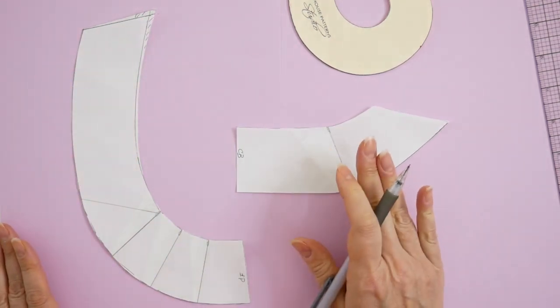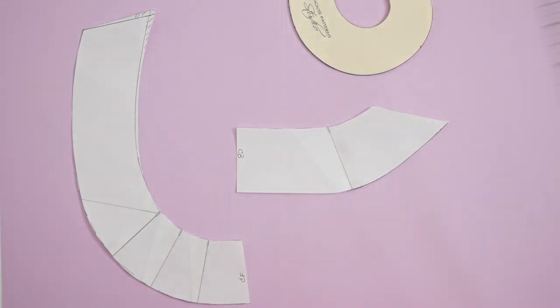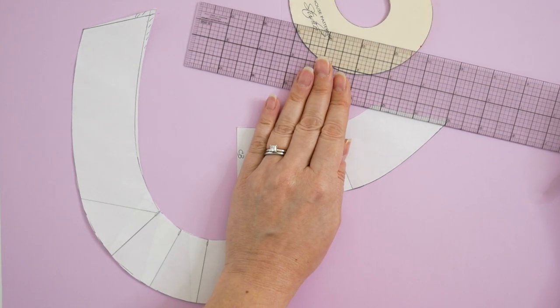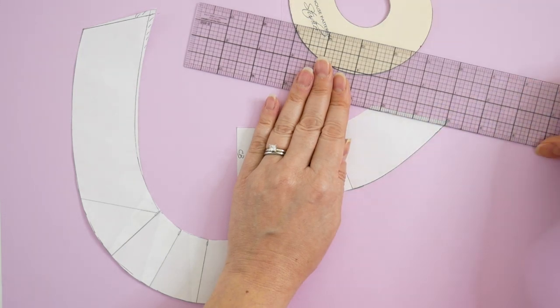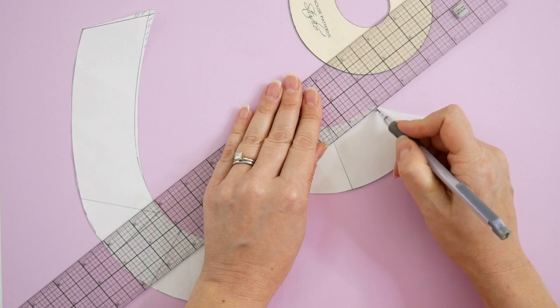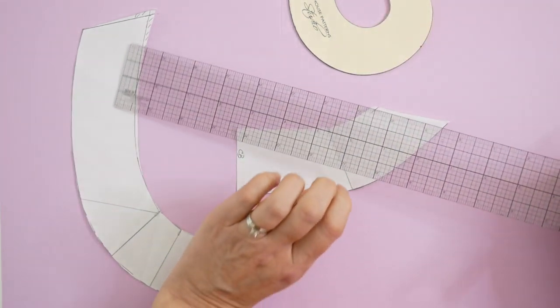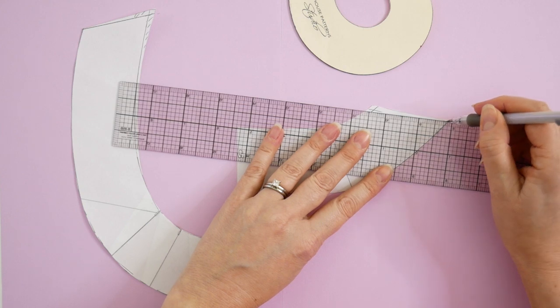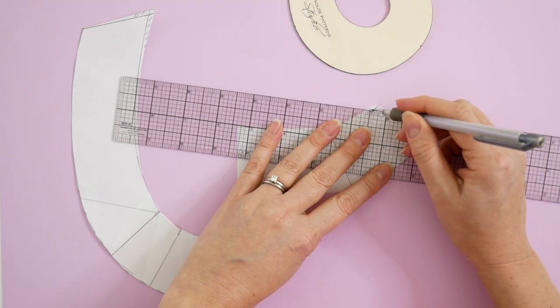Now for the back we're going to do exactly the same thing. Again, I'm going to knock this corner back at the neckline by an eighth of an inch, and I'm also going to do this one by an eighth of an inch. So I'm basically knocking out that corner and then blending back into the outer edge of the back neckline facing here.